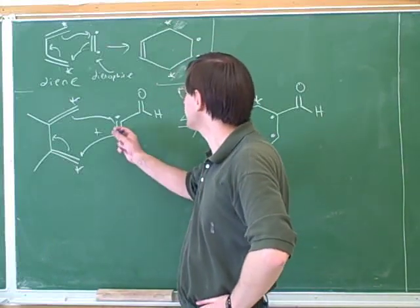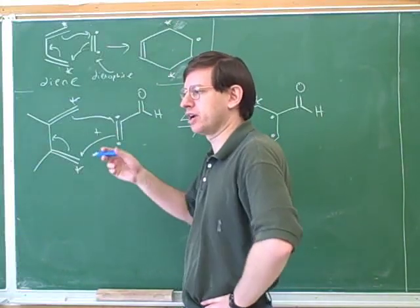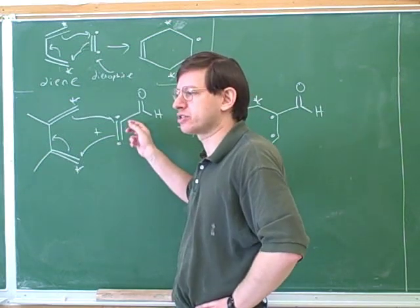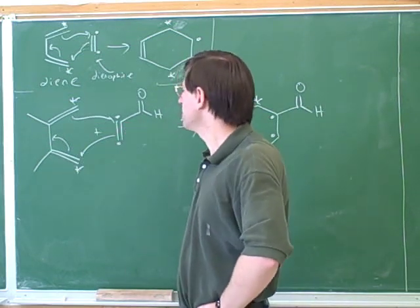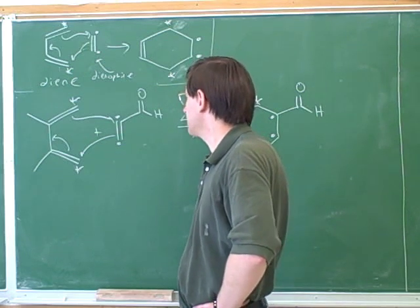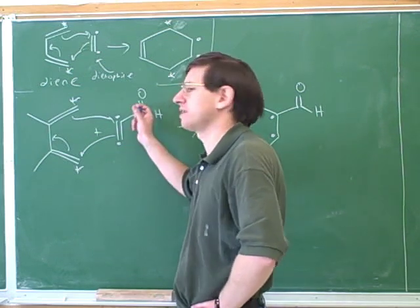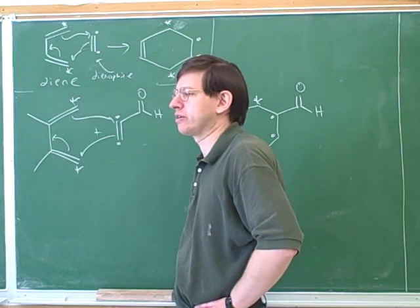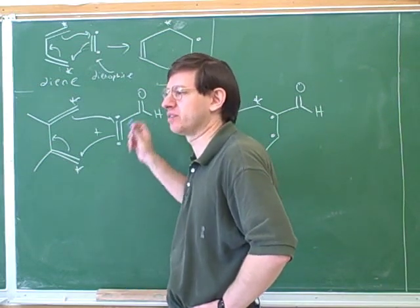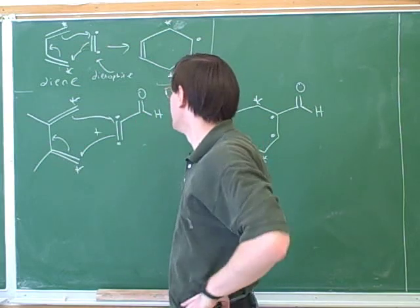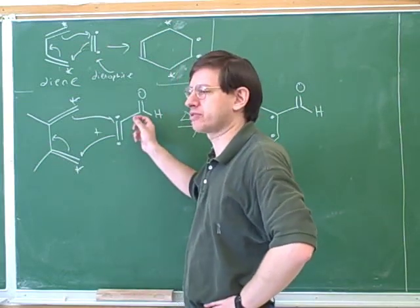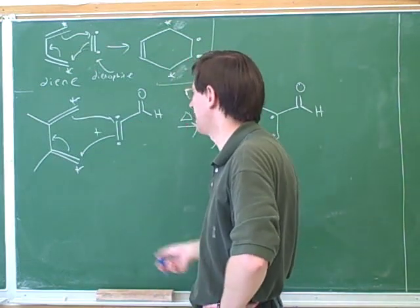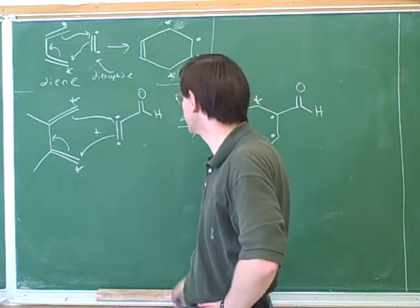One of you drew the other resonant structure for this compound. There actually isn't any benefit to drawing that resonant structure for this reaction. The only reason you should know that resonant structure exists is because it explains how this is electron withdrawing. So the only time you would actually have to draw that resonant structure is if the test asks you to explain why this is electron withdrawing. We just know this is electron withdrawing and that's going to help us to be the dienophile.